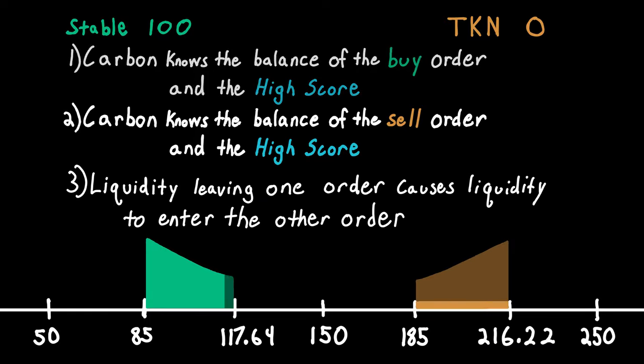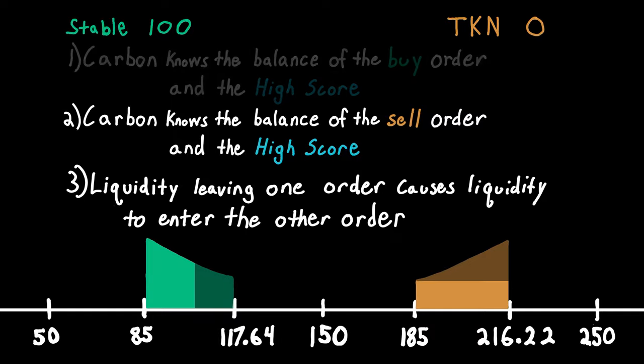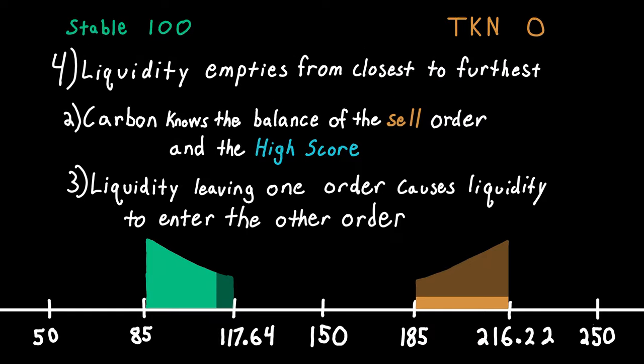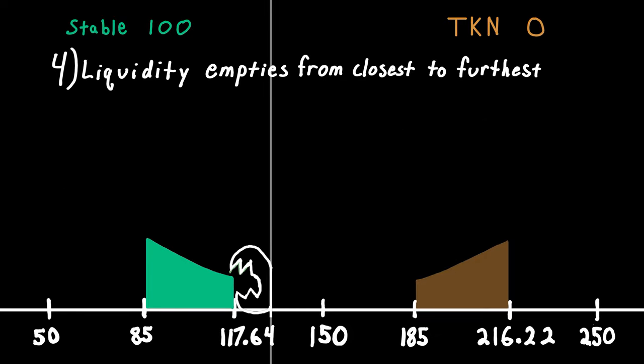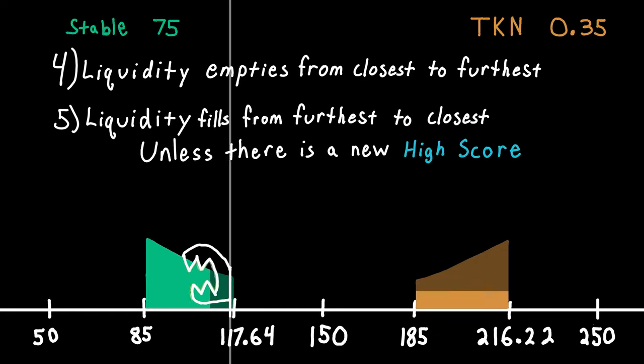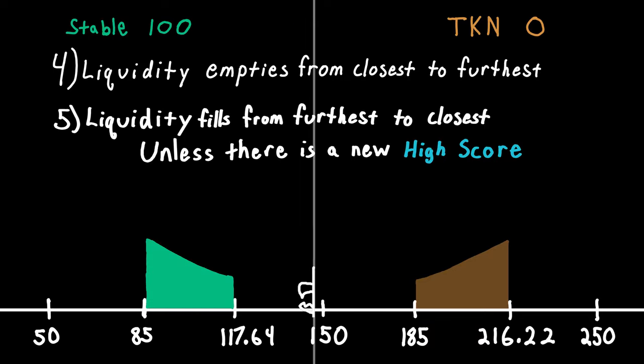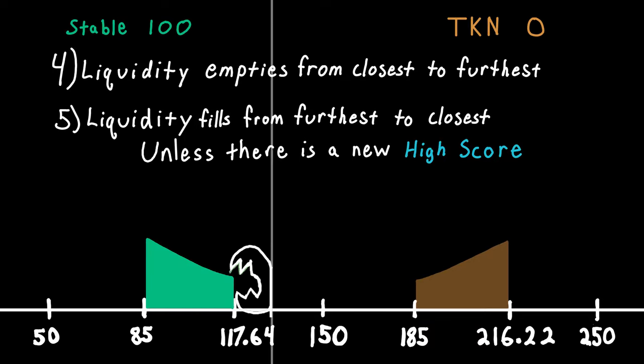Liquidity leaving one order causes liquidity to enter the other order. Liquidity empties from closest to furthest. As the price dips, traders will eat through the liquidity which is closest to the spot. Liquidity fills from furthest to closest, unless there is a new high score.